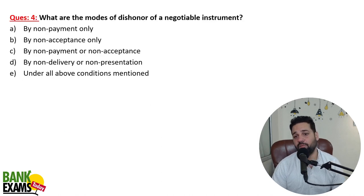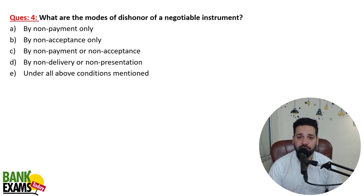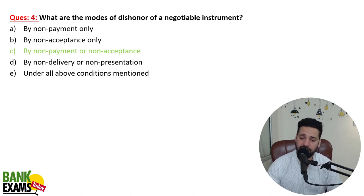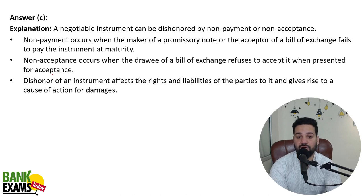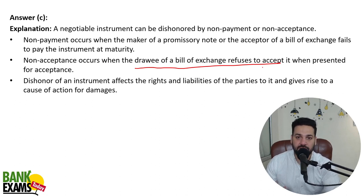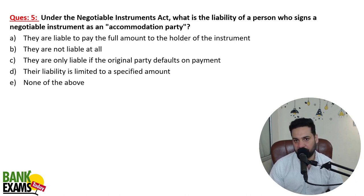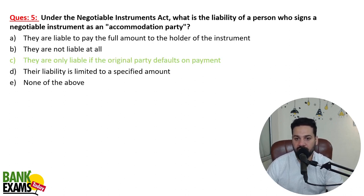Question four: What are the modes of dishonor of a negotiable instrument? Two ways — in case of a simple cheque, dishonor happens on non-payment. In case of a bill of exchange, dishonor occurs on non-acceptance — when the drawee refuses to accept it. Question five: What is the liability of a person who signs as an accommodation party? An accommodation party is basically a guarantor. They are only liable if the original party defaults.